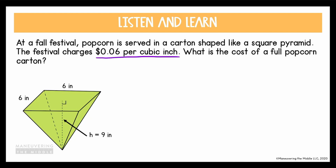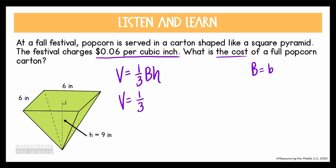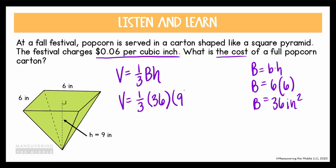This is a pyramid — a rectangular or square pyramid. I know I'm going to use the formula V equals one-third base times height. Since it's a square, big B equals 6 times 6, which gives me 36 inches squared. Going back to my volume formula, the area of the base is 36 and the height is 9, so the volume equals 108 inches cubed.